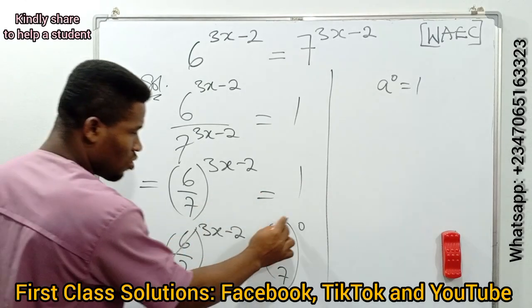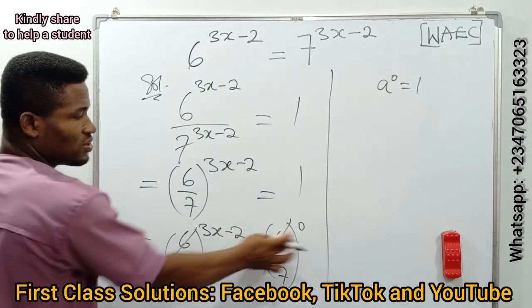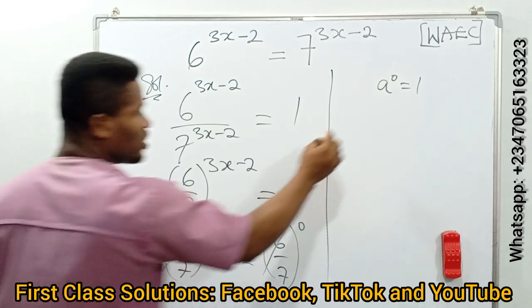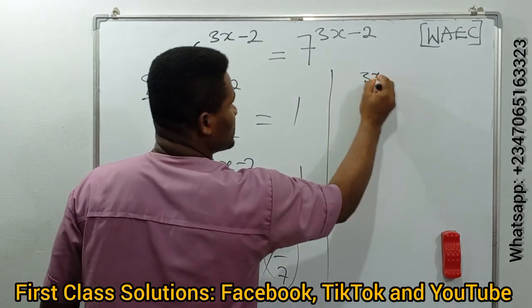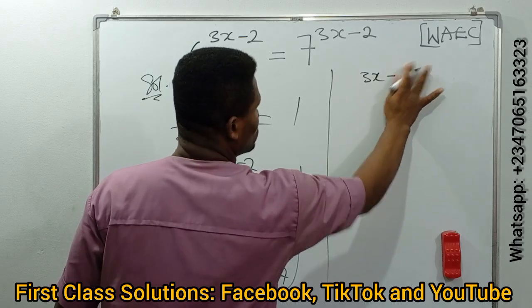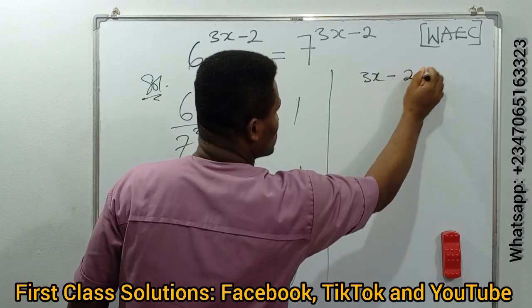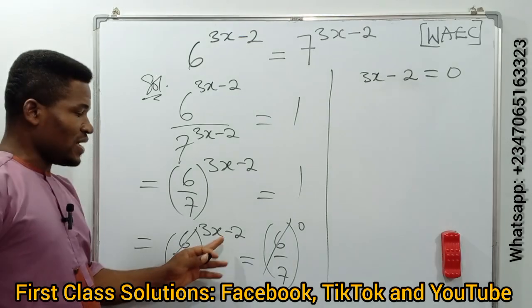Now when the bases are equal, what do we do? We simply equate the powers. So when we equate the powers, we have 3x - 2 = 0.